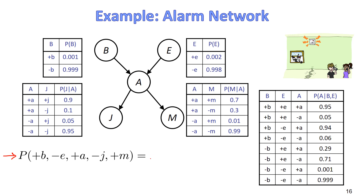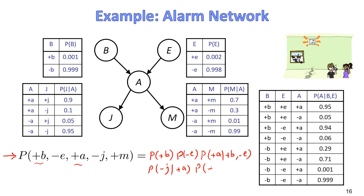So this probability — P(+b, -e, +a, -j, +m) — will be: P(+b) times P(-e), because B and E have no parents; then P(+a | +b, -e), given its parents B and E; times P(-j | +a), given its parent A; times P(+m | +a), given its parent A.